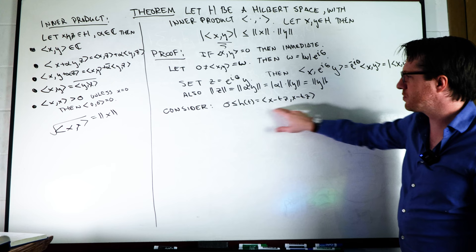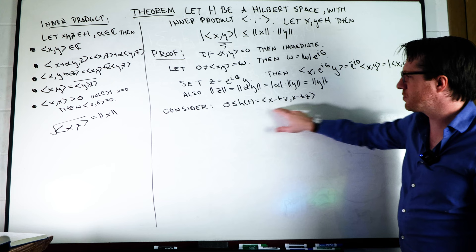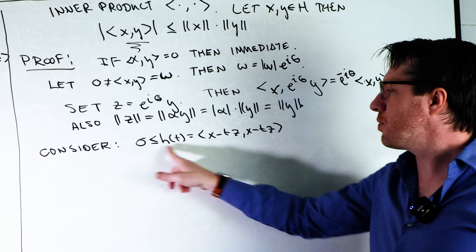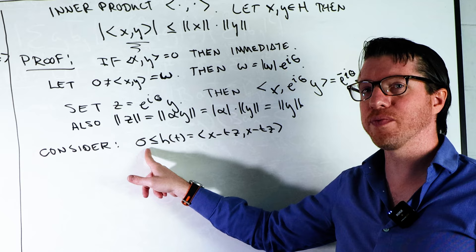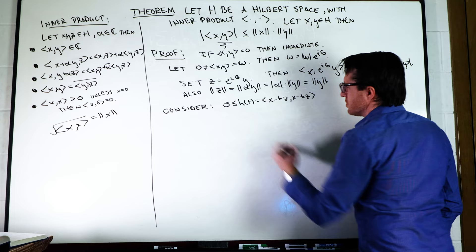Since the magnitude of e^(iθ) is 1, we have that the norm of the vector z is the same as the norm of the vector y. We can go ahead and talk about this function h(t), and this is a quadratic equation, or at least we'll see it is, where we're going to have this x minus tz inner product with itself. We know that a vector inner product itself is going to be at least zero, but it's not going to be negative. So what I can do now is expand this out in terms of these two properties.